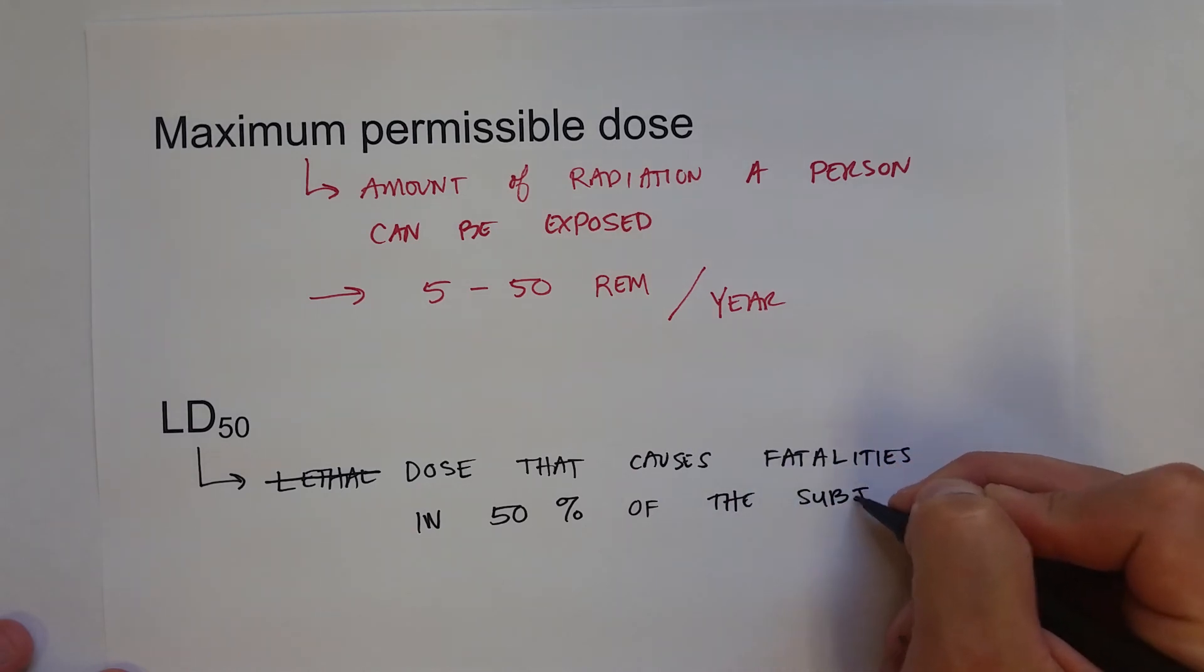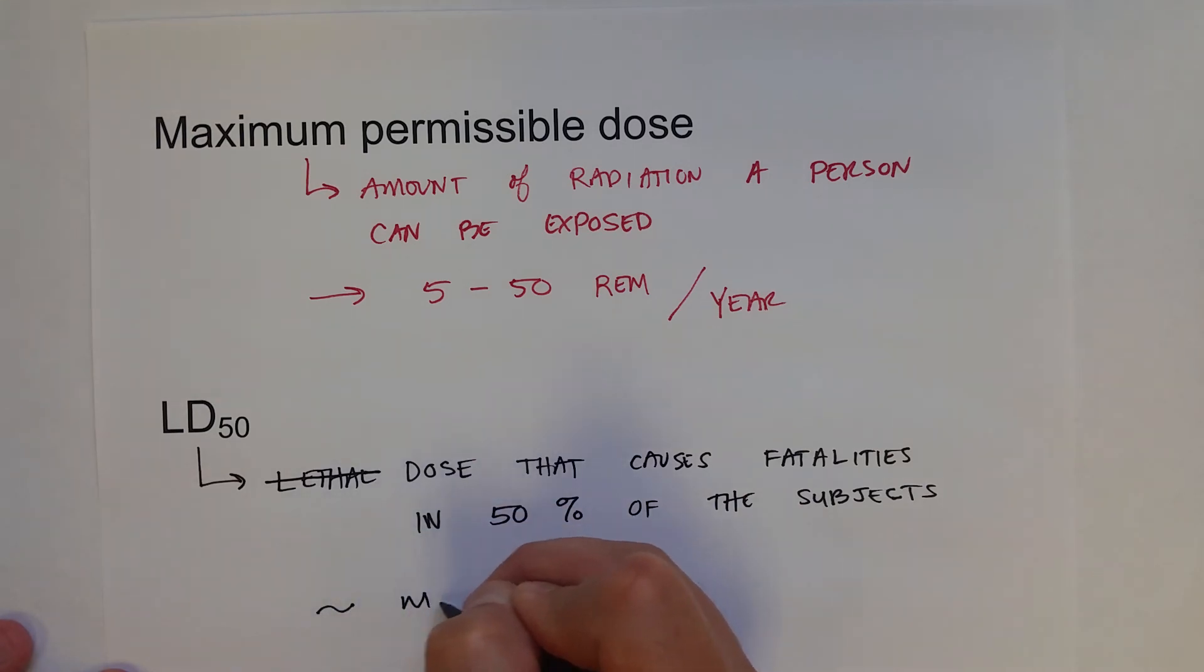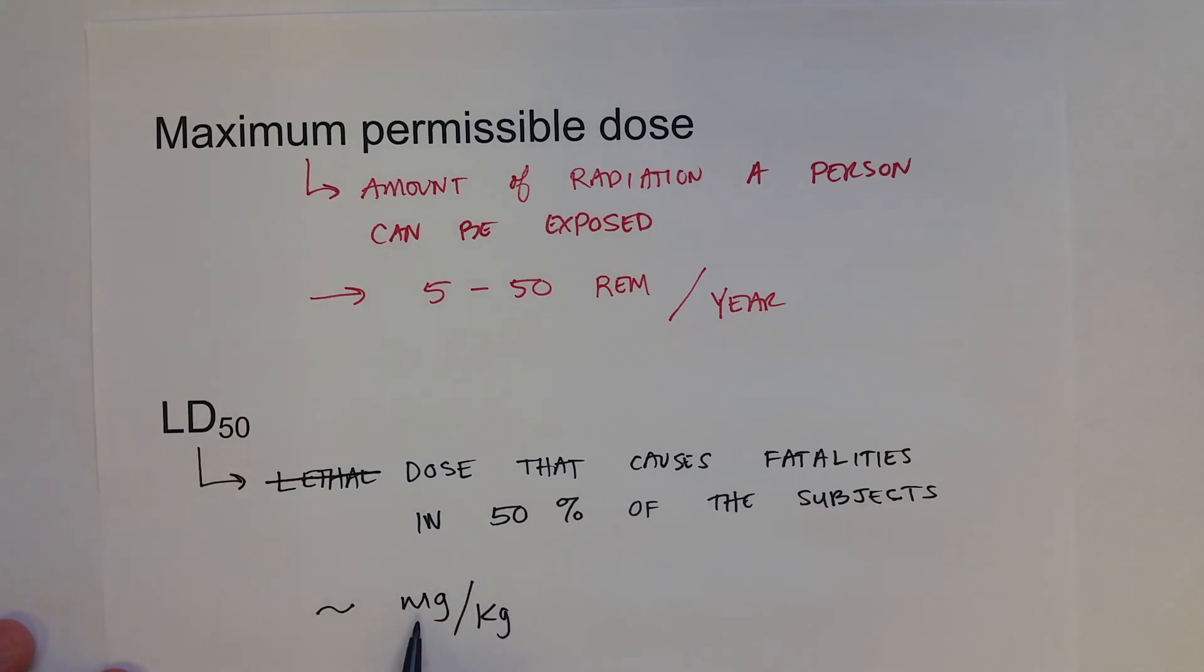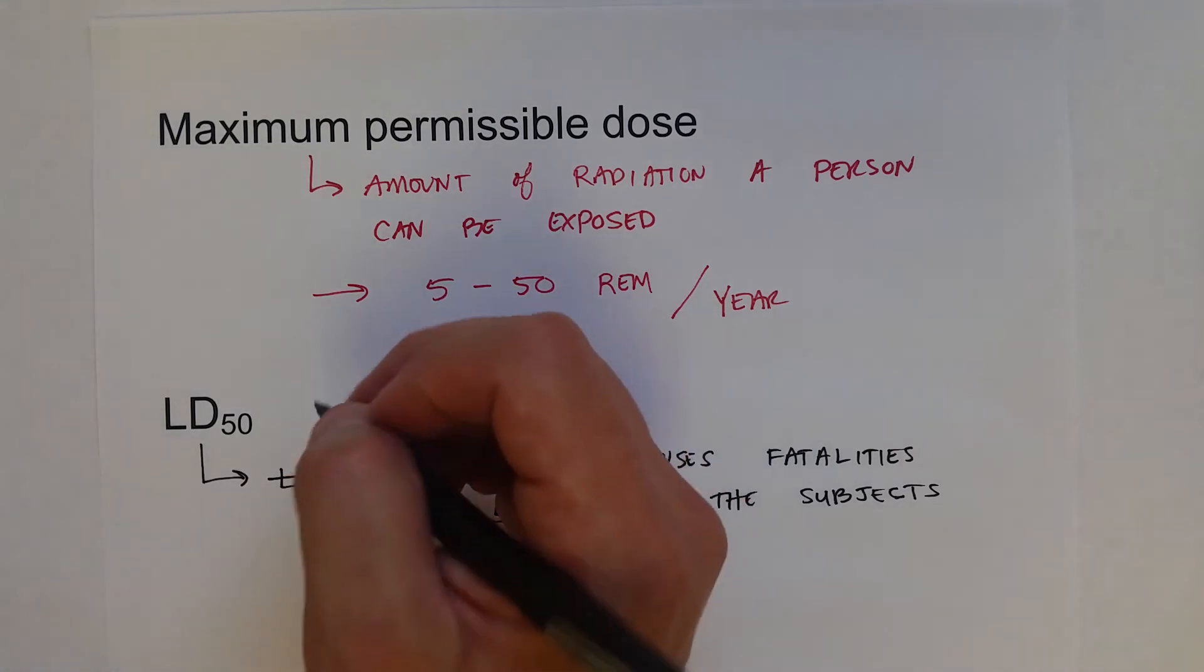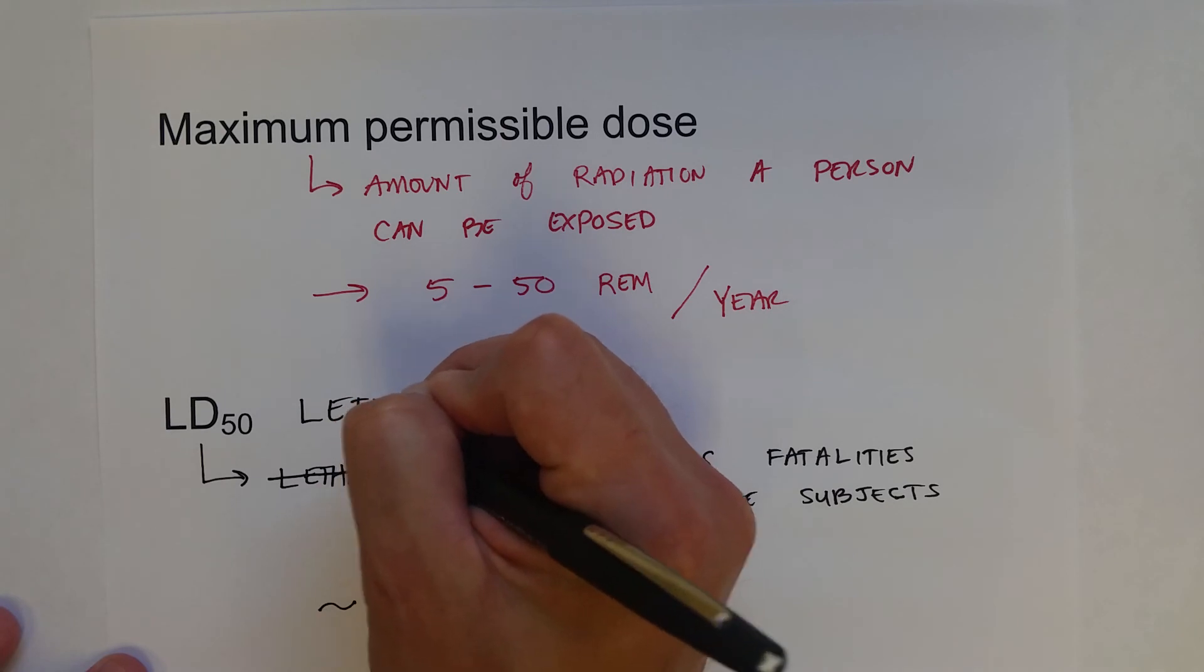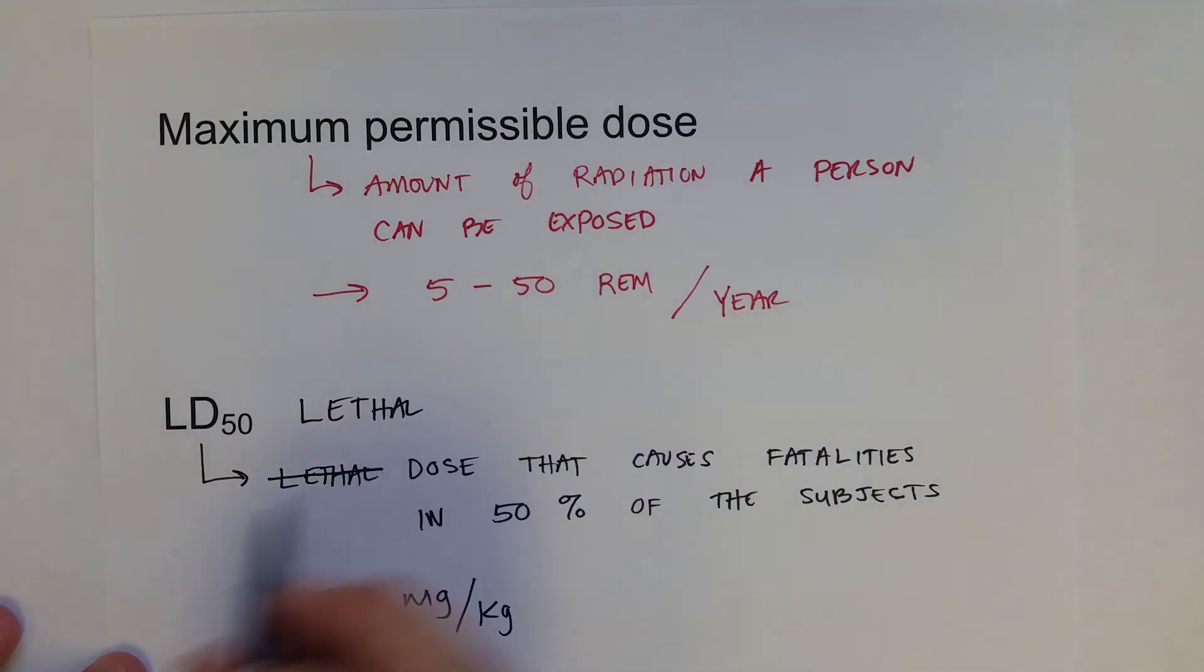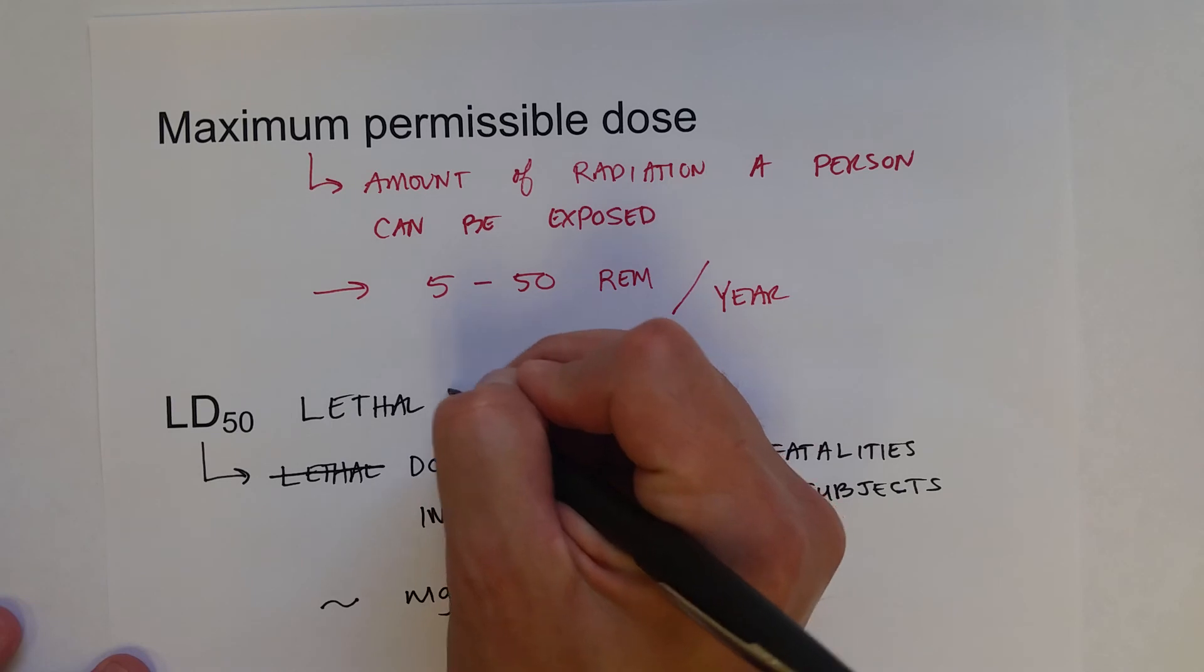These are usually measured in milligrams per kilogram - amount of radioactive substance that you can take per kilogram of your body weight. So if this dose, whatever it is, was given to say a thousand people at the LD50 level, 500 people would die.